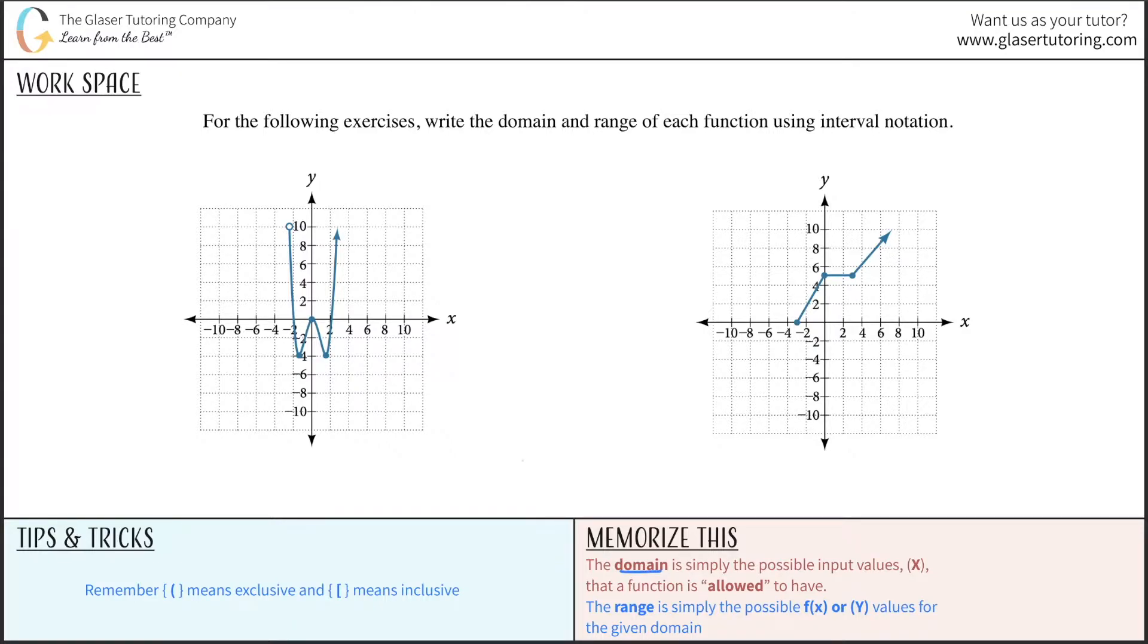Remember, domain is basically the possible x values that a function is allowed to have, and the range is simply the set of y values.